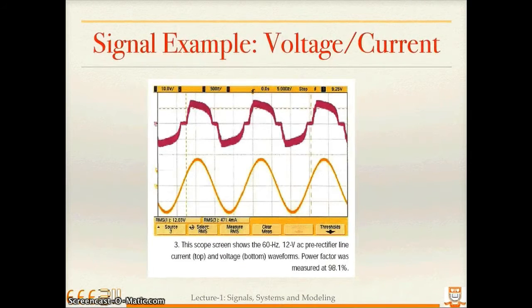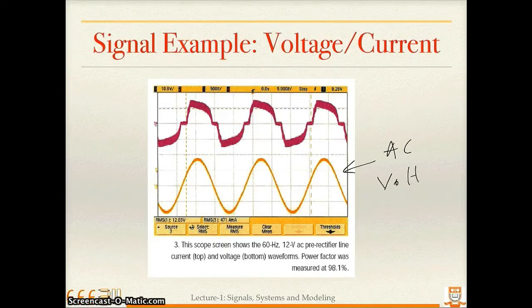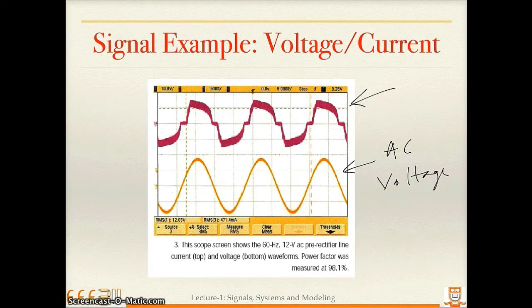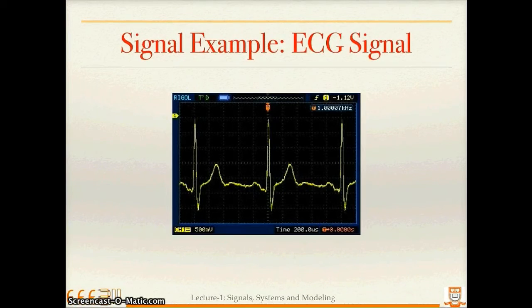Moving on to the next example, which is very familiar to electrical engineers: it is basically an AC voltage. If you apply this AC voltage to a non-linear device, you may get a different waveform for the current. These are from real circuits — the applied voltage and the resulting current in a non-linear device — and the current signal has some distortion.